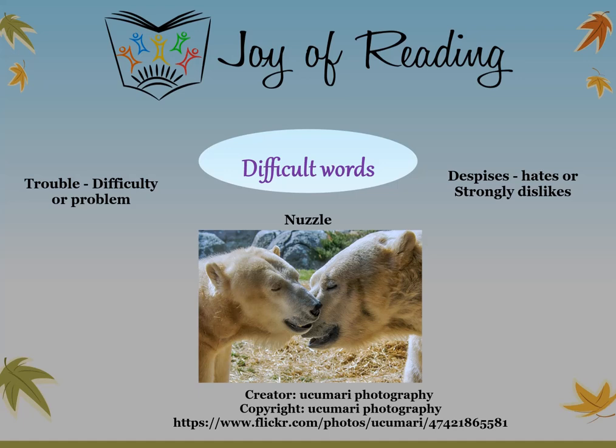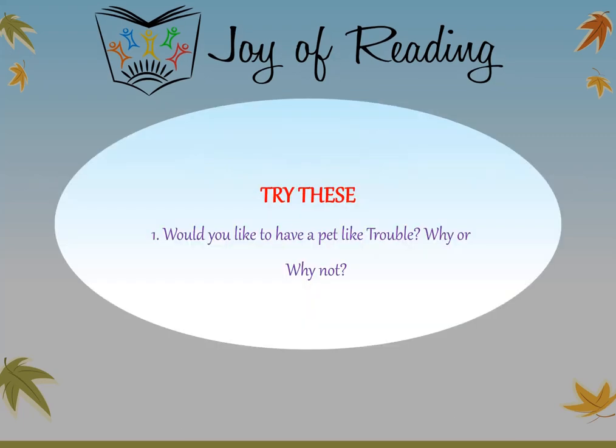Let's look at some difficult words from the story. Trouble: difficulty or problem. Despises: hates or strongly dislikes. Nuzzle: rub or push against gently with the nose and mouth. Try this: would you like to have a pet like Trouble? Why? And if you don't, why not? Till we meet again next time. This is Harini signing off. Bye.